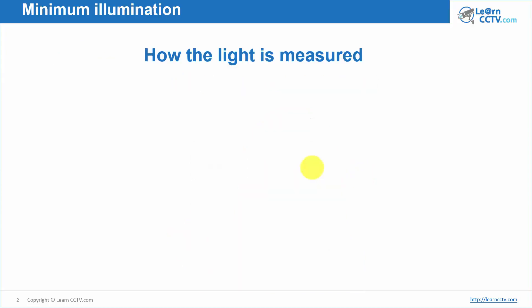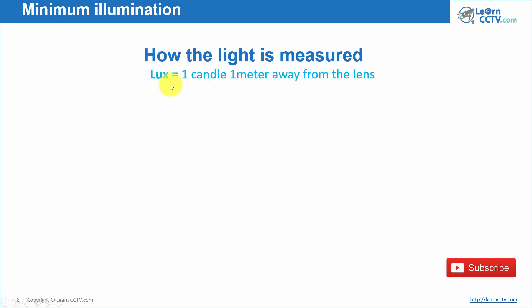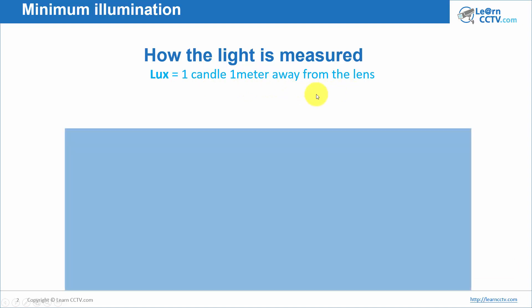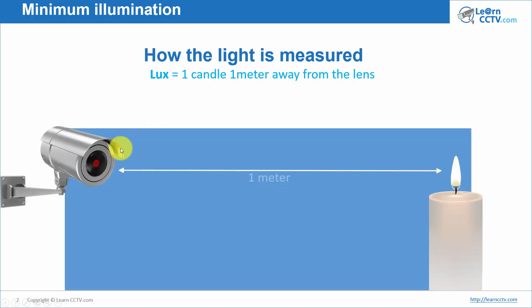Let's see the concept of how light is measured so you can better understand minimum illumination. We have LUX — the unit of measurement of light. If you have one candle one meter away from the lens, the amount of light coming and hitting the lens and sensor in the camera is one LUX.